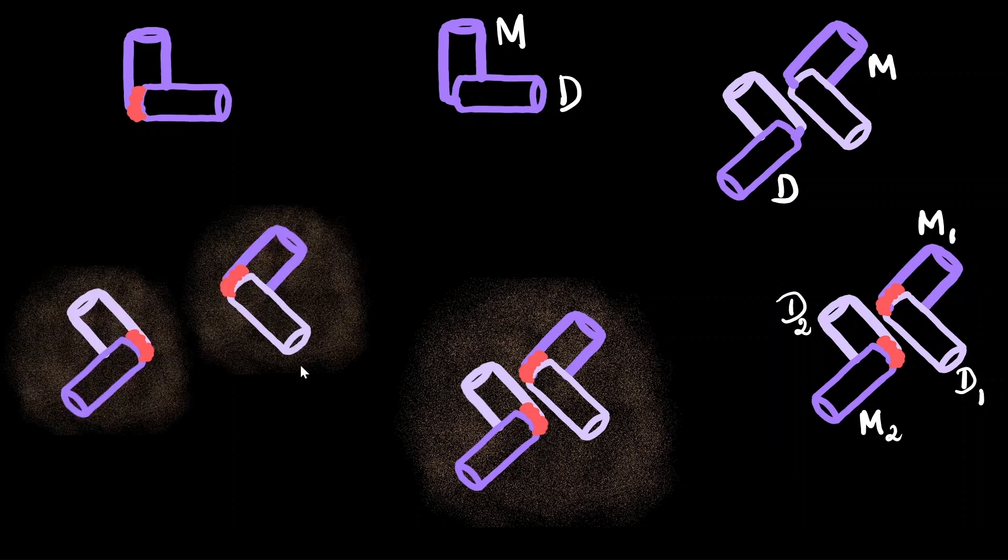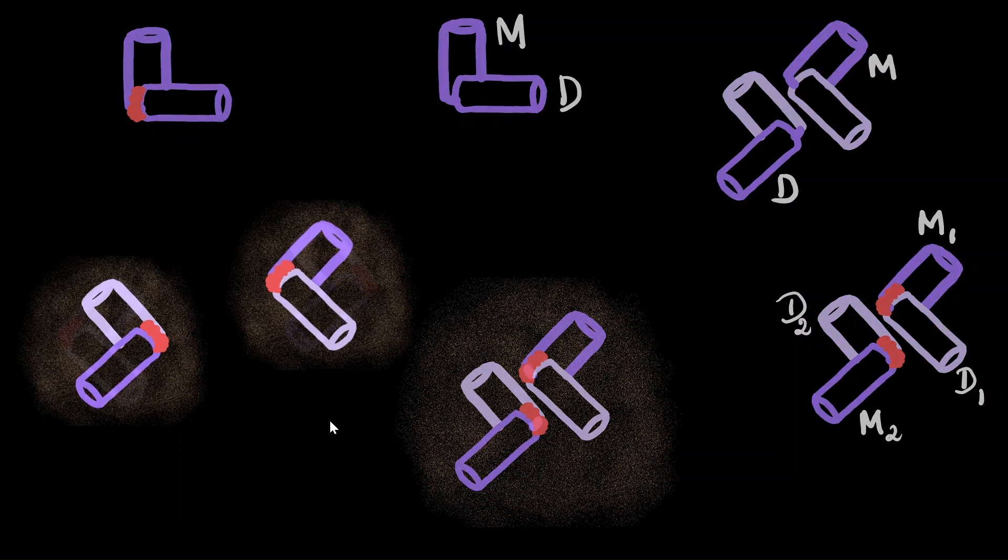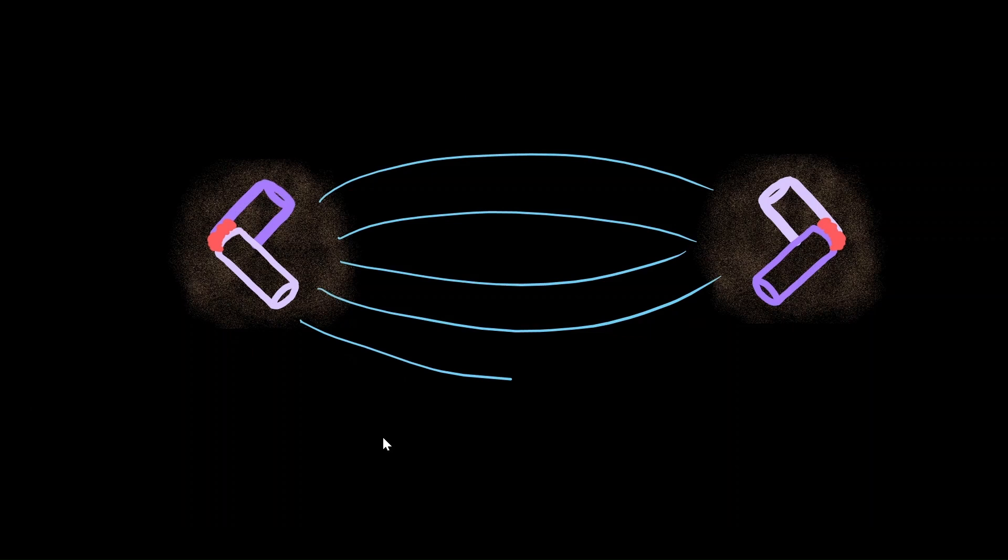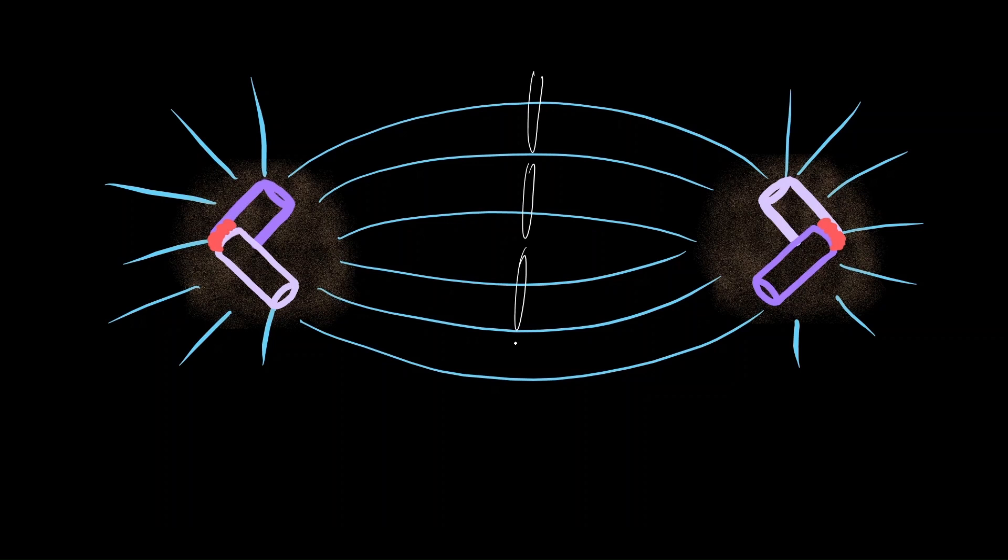As they are separating from each other, they start developing microtubules that project out into the cytoplasm. Each of the centrioles moves to opposite poles and the spindle fibers start forming between them. Usually the chromosomes would be arranged somewhere over here.